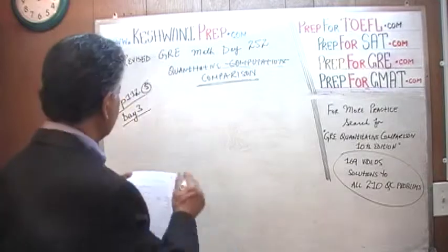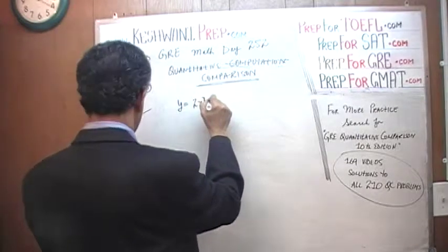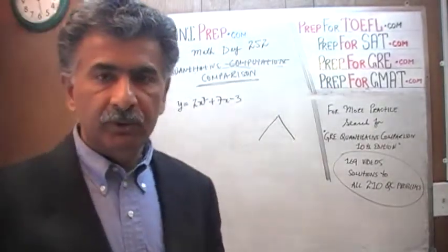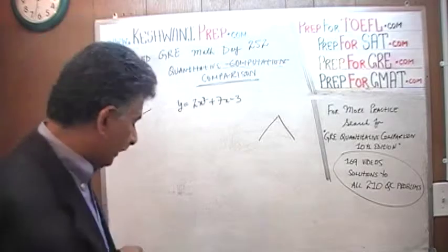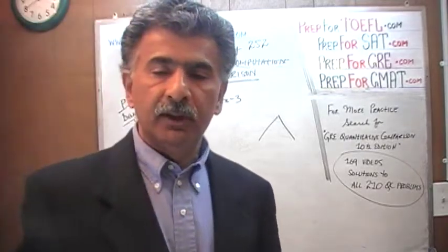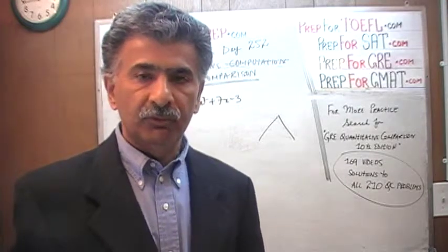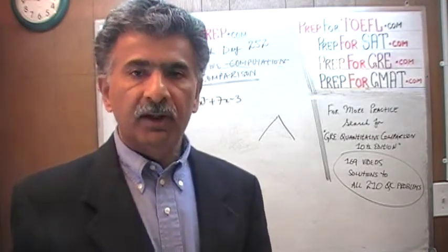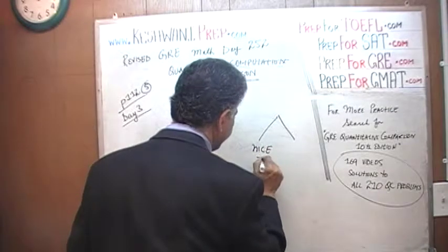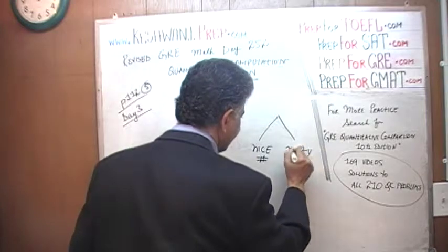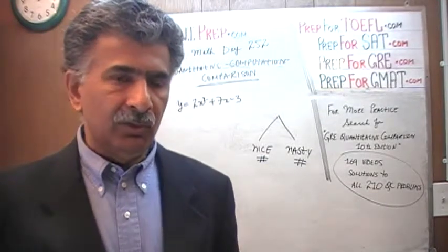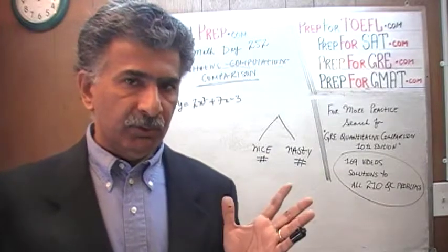Problem number 5. We are told that y equals 2x squared plus 7x minus 3. The key thing to keep in mind is that on the GRE, numbers come in two flavors: they are either nice or nasty. When doing a quantitative comparison question, always make sure you try out at least one set of nasty numbers just to make sure the answer does not change — because that is what we are trying to see: if the answer changes. If the answer changes, then the answer is D.